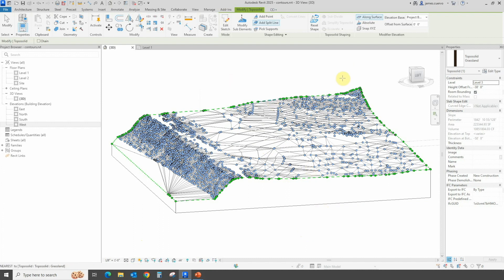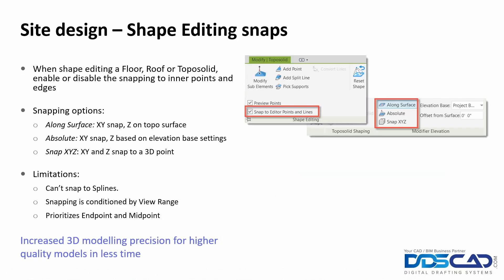Another improvement in site design is Shape Editing Snaps. When shape editing a floor, roof, or topo solid is enabled or disabled, snapping to inner points and edges is now turned on via a snapping options toggle. Snapping options include: snap X/Y along the surface with Z on topo surfaces; absolute X/Y snap with Z based on elevation settings; and X, Y, and Z snapping to a 3D point. Limitations include: you cannot snap to splines, snapping is conditioned by view range, and endpoints and midpoints are prioritized.